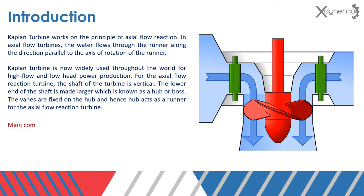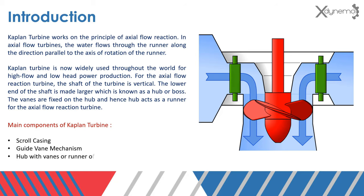Here are the main components of Kaplan turbine: scroll casing, guide vane mechanism, runner of the turbine, and draft tube.